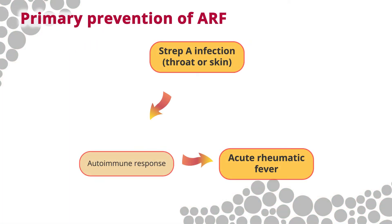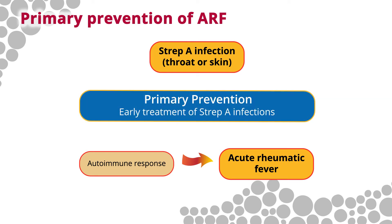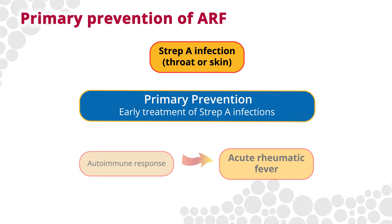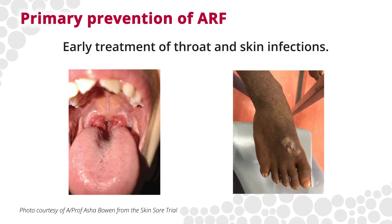Primary prevention aims to interrupt the link between Strep A infection and the abnormal immune response to the Strep A infection that causes acute rheumatic fever. This requires early identification and treatment of Strep A infections of the throat and skin to prevent ARF. The mainstay of primary prevention of ARF is early treatment of throat and skin infections.